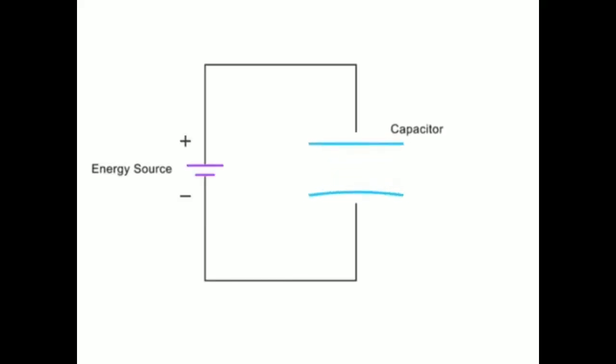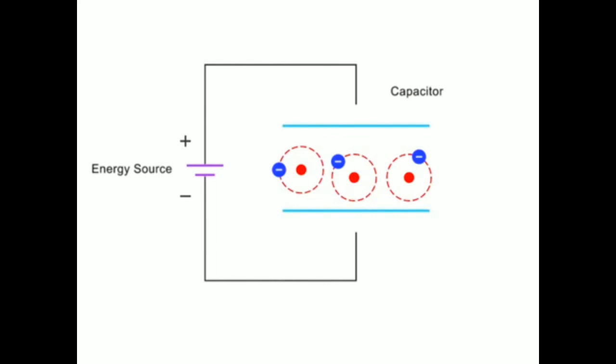Capacitors work to store energy by stretching the orbits of electrons in a dielectric compound between a positively charged plate and a negatively charged plate.